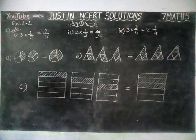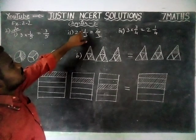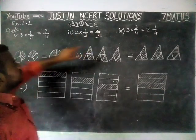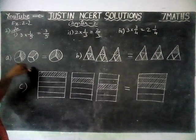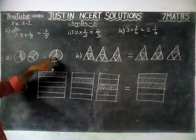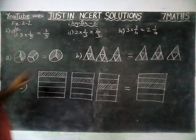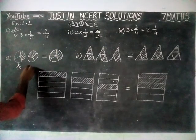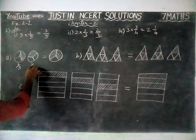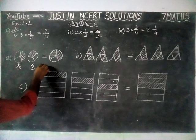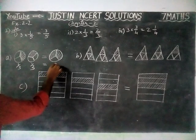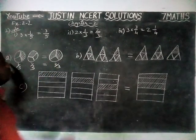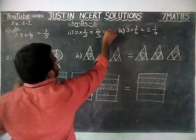And the answer is equal to — out of three, two is added, so two by three. We can check it here: two into one by three is equal to two by three. We have two pictures, each also one by three, and one by three plus one by three is equal to two by three. So for this second question, answer is Option A.